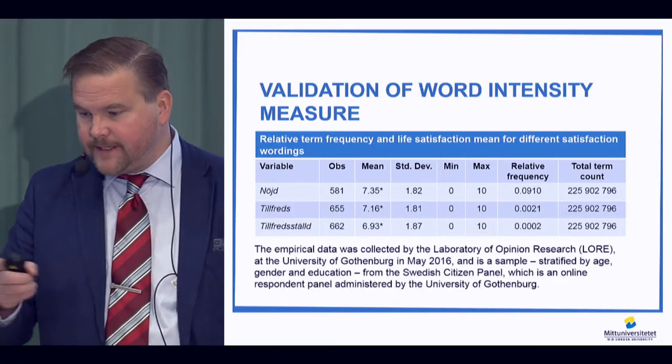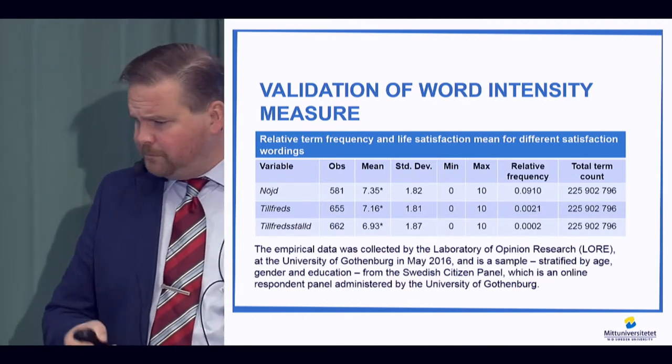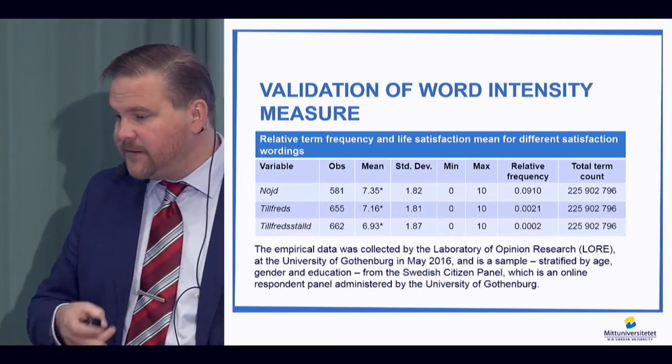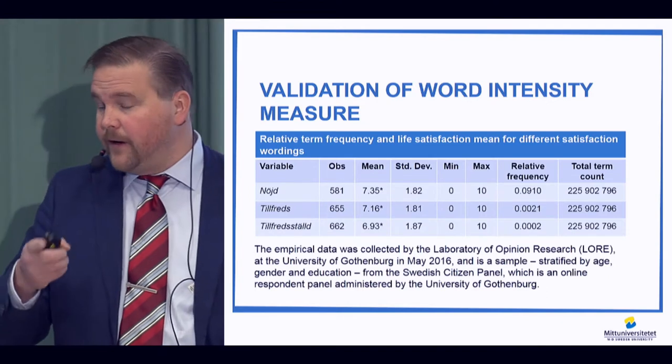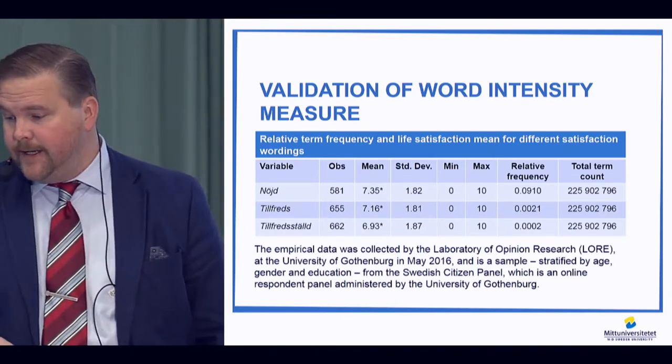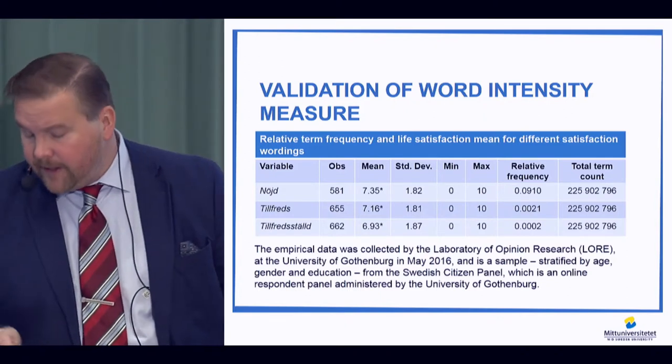If we look at 'happy' and the translated terms, we find English at the top, and Danish, Norwegian, and Swedish at the bottom. All of this points to something interesting: relative frequency might tell us something about the intensity of a term. I also ran a survey experiment on this — randomizing respondents in a web survey, trying different translations — and found significant differences across the groups depending on what translation we use. This was perfectly linear with the relative frequency in our database.